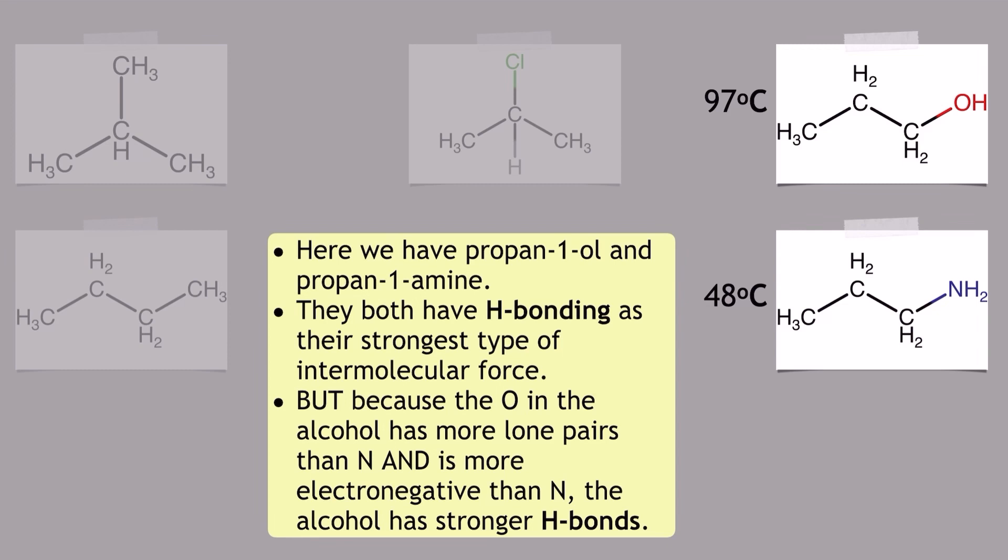Now the reason for this is because the oxygen in the alcohol structure has got more lone pairs than the nitrogen in the amine and also the oxygen in the alcohol structure is more electronegative than the nitrogen in the amine and this causes for it to have stronger hydrogen bonds between its molecules. Therefore more energy is required to break them and that explains the higher boiling point despite the fact that both of these have hydrogen bonding as their strongest type of intermolecular force.